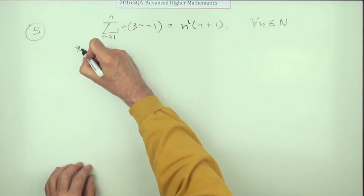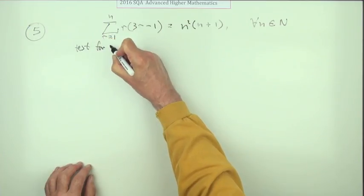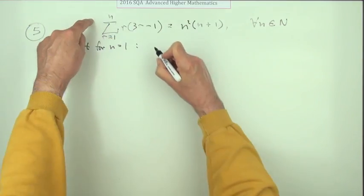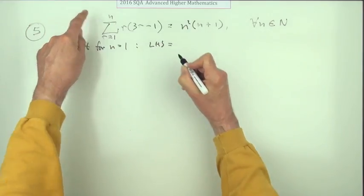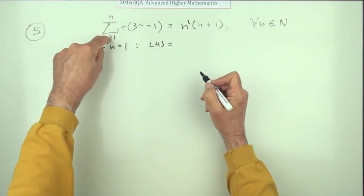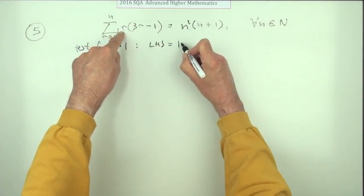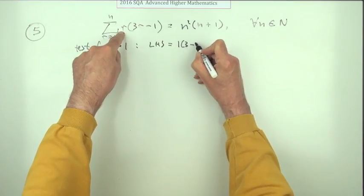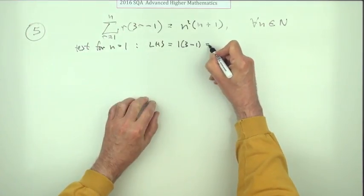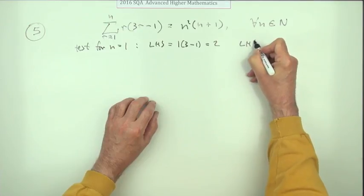Test if it's true at the start, test for n equals 1. We'll just take the left hand side. If n is 1, you're just going from 1 to 1, so it's only the first term which would be 1 times 3 minus 1 which equals 2.